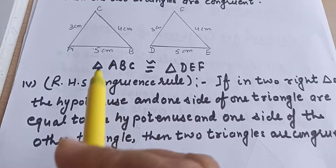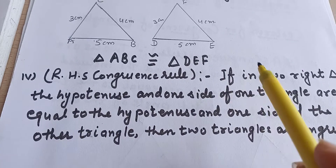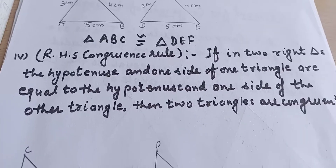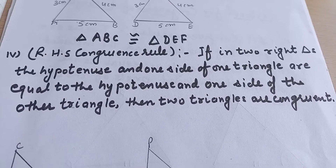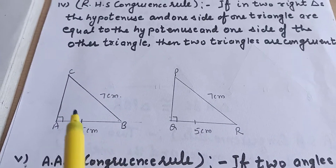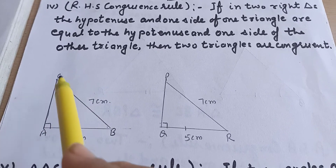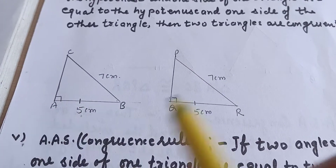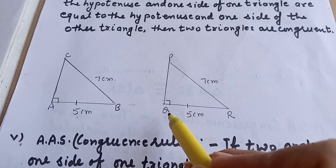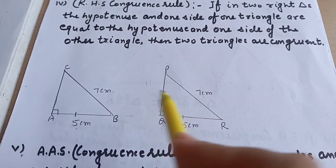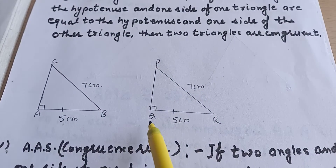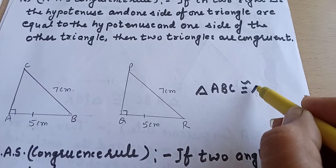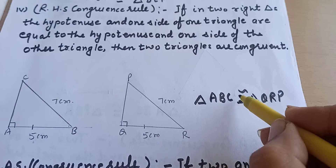After that, we have our next criteria: RHS, which is applicable to right-angled triangles. In the case of a right-angled triangle, if the hypotenuse and one side of one triangle are equal to the hypotenuse and one side of another triangle, then the triangles are congruent. Here, for triangle ABC and triangle QRP: angle A = angle Q (right angle), hypotenuse BC = RP, and side AB = QR. So triangle ABC is congruent to triangle QRP by RHS.